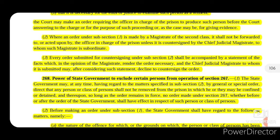Every order sent to the Chief Judicial Magistrate under subsection 2 may, after consideration, be declined for countersigning. So the CJM has the power to decline to countersign the order — he may not sign that order.